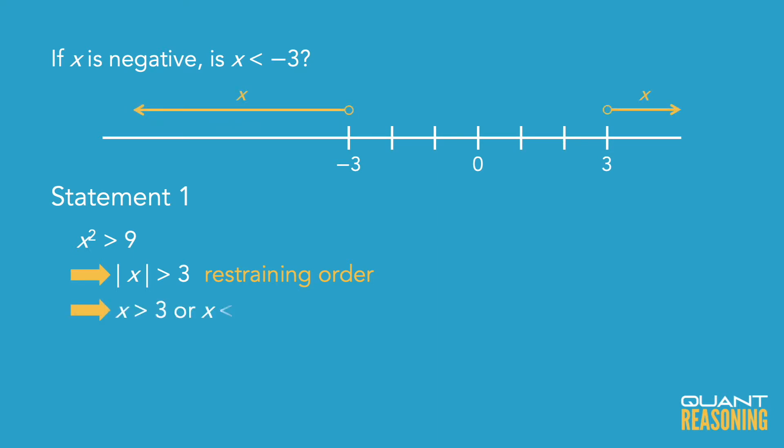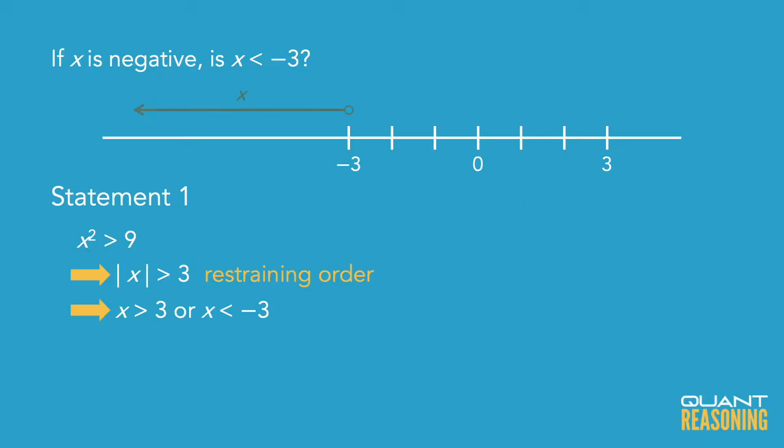Now remember, we know that x is negative and we just wanted to know which side of negative 3 it's on. So if we know that x is negative, then x is not greater than 3, which only leaves us with x is less than negative 3, which answers the question definitively. x is to the left of negative 3. So statement 1 is sufficient on its own and we should eliminate the answer choices that claim that it's not. Let's look at statement 2.